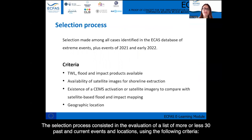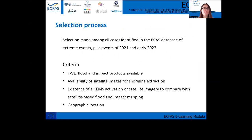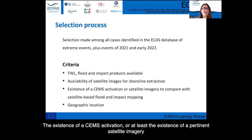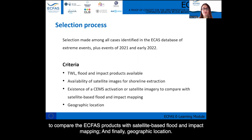The selection process consisted in the evaluation of a list of more or less 30 past and current events and locations using the following criteria: the total water level flood and impact products are available or computable; satellite images to support automatic shoreline extractions are available; the existence of a CMS activation or at least the existence of previous satellite imagery to compare the ECFAS products with satellite-based flood and impact mapping; and finally, geographic location.